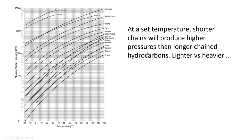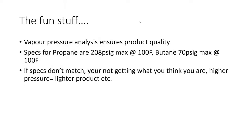The relationship between temperature and pressure is non-linear, as shown on the graph — none of the lines are straight and there are all kinds of different products. At a set temperature, shorter-chain hydrocarbons produce higher pressures than longer-chain ones. Things like propane and butane are gases with short hydrocarbon chains; gasoline has medium-length chains; as chains get longer the product gets thicker — from gasoline to diesel to hydraulic oil to bitumen. As they get thicker or heavier the carbon chains get longer and less volatile.